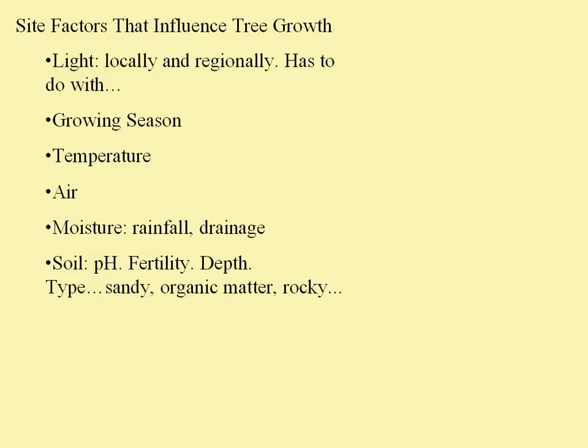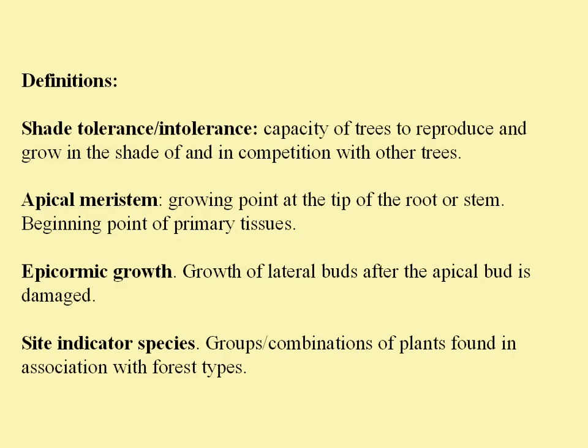A couple of definitions to pay attention to are shade tolerance and intolerance — you'll hear those used more frequently as we touch on other modules. That's just the capacity of trees to reproduce and grow in the shade of and in competition with other trees. Trees that are able to grow in the shade are considered shade tolerant. Trees that love the sun or have to be in the sun are called shade intolerant.